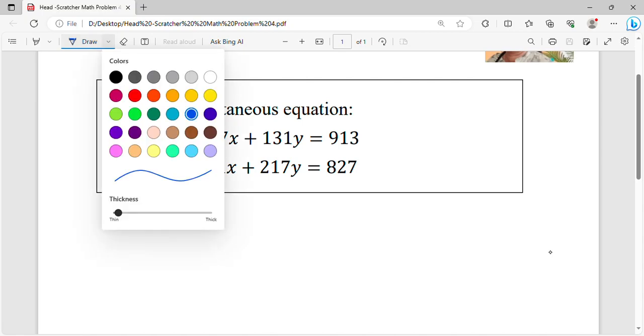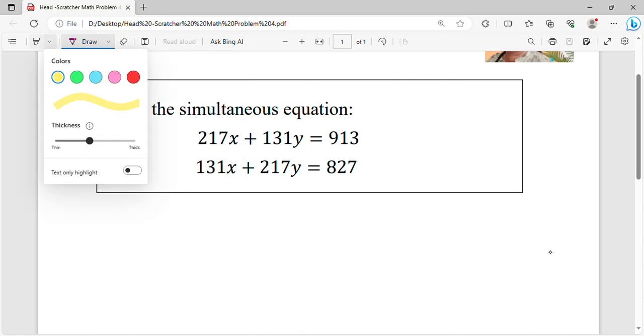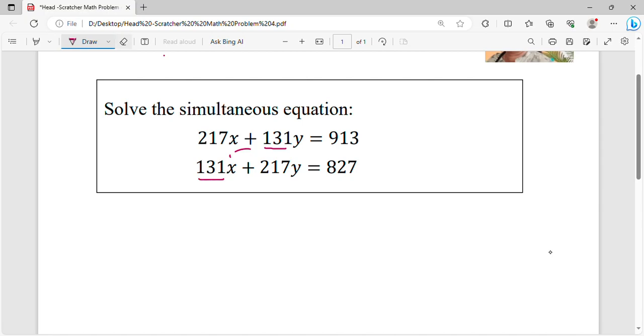Basically what you need to see in this type of question is, do you see that this y coefficient and this x coefficient are the same? And you see that this coefficient and this coefficient, the x and y, are the same? So when you see this particular pattern, all you have to do is label this as equation 1, label this as equation 2.